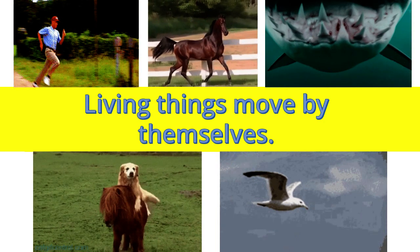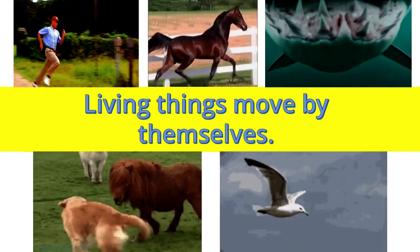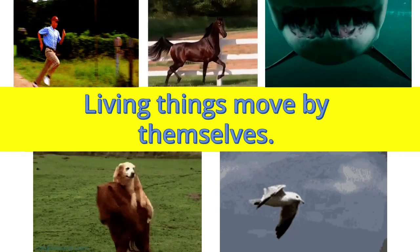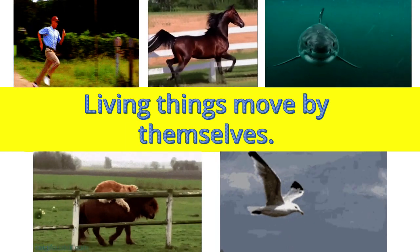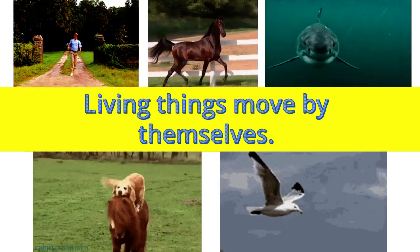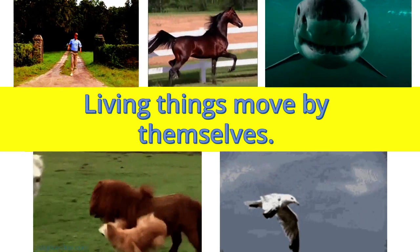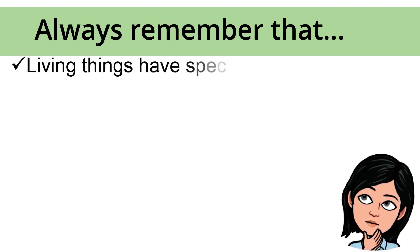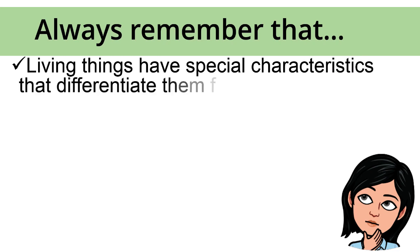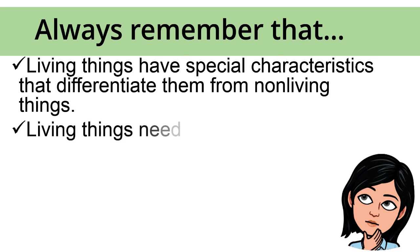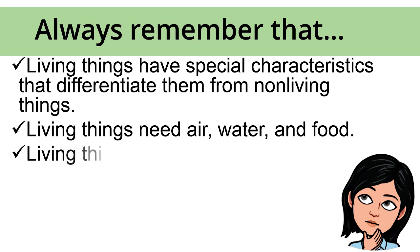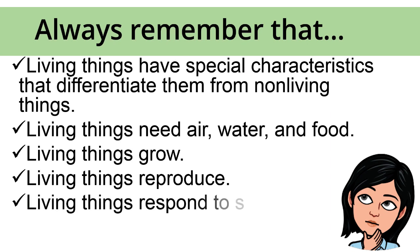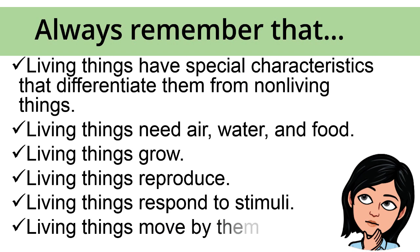Living things move by themselves. There are many ways living things move — some living things move by walking, running, flying, crawling, and climbing. Plants have parts that move too. Always remember: living things need air, water, and food; living things grow; living things reproduce; living things respond to stimuli; and living things move by themselves.